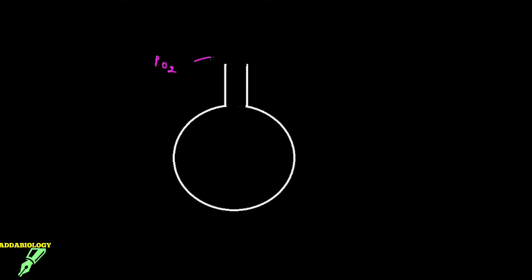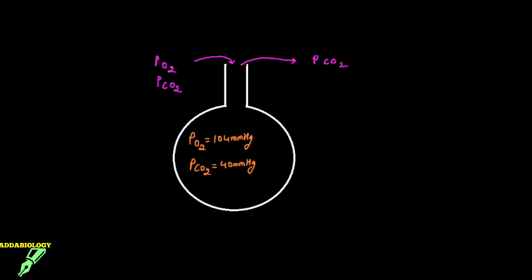We inhale oxygen-rich air, so that air will contain some amount of oxygen as well as some carbon dioxide. The partial pressure of oxygen that we inhale will be definitely higher than the partial pressure of oxygen present in the blood, because diffusion has to take place. So the partial pressure of oxygen in the alveoli is 104 mmHg. The partial pressure of carbon dioxide that we inhale is low — it's 40 mmHg. Whenever I say low carbon dioxide concentration, it is 40 mmHg.